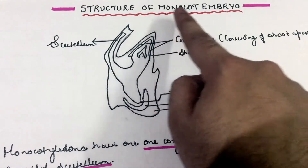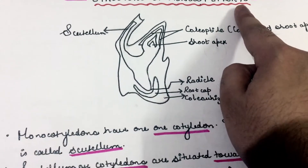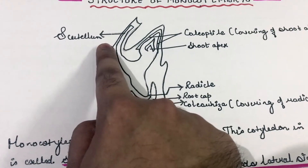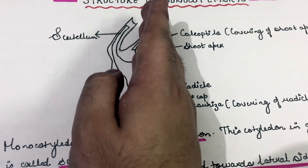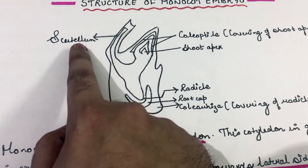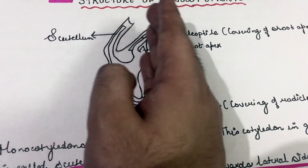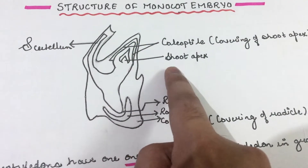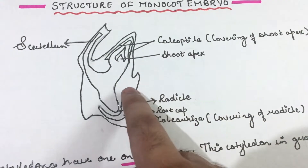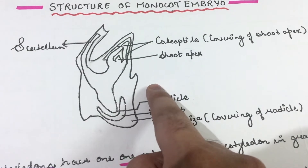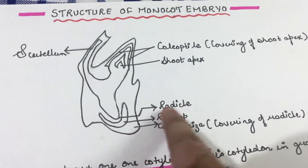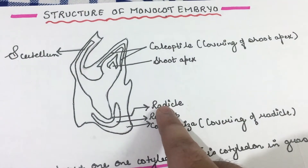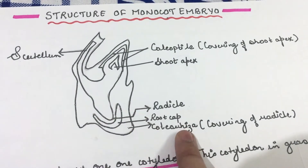Now let us look at the structure of monocot embryo. The monocot embryo has only one cotyledon, and that cotyledon in the grass family is called the scutellum. The scutellum, or cotyledon, is situated towards the lateral side of the embryo. The part of the embryo above the level of the scutellum is the epicotyl, which ends in the shoot apex, and the part below the level of the cotyledon is the hypocotyl, which ends in the radicle. The shoot apex is covered by a sheath of cells called the coleoptile, and the radicle is covered by a sheath of cells called the coleorhiza.